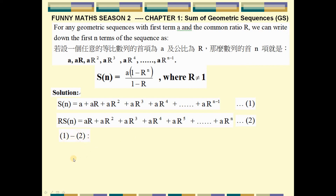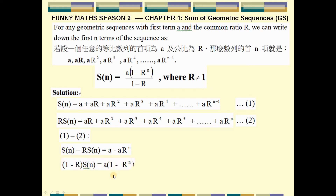Therefore, the left hand side S_N minus R times S_N equals the right hand side A minus A times R to the power N. Factoring out S_N on the left gives (1 minus R) times S_N, and the right hand side is A times (1 minus R to the power N). Dividing both sides by (1 minus R) gives us the sum of the geometric sequence formula.